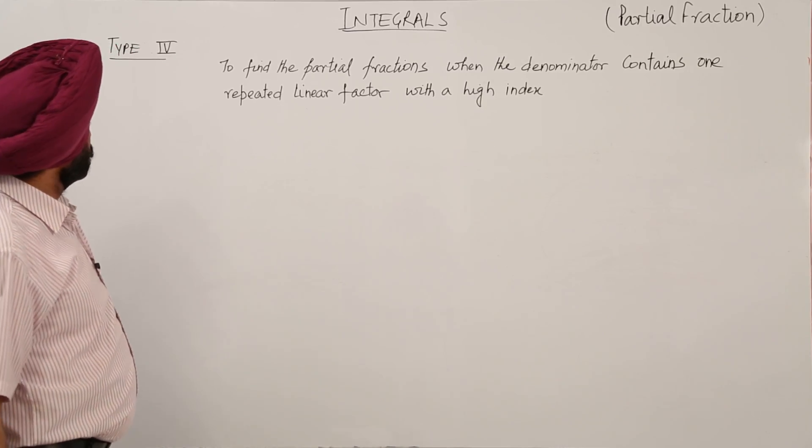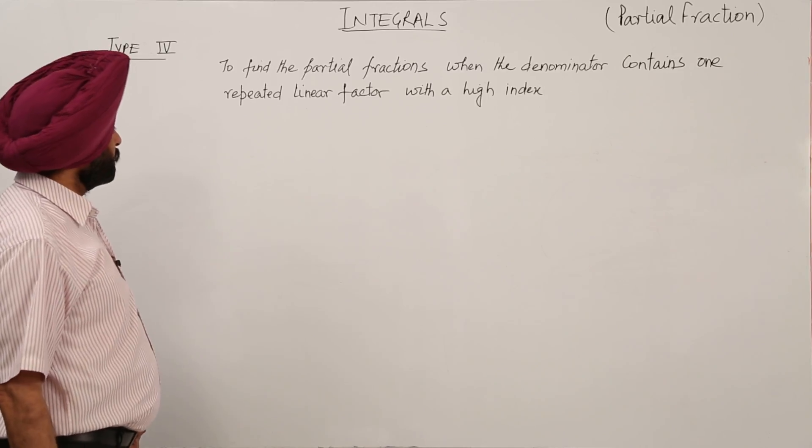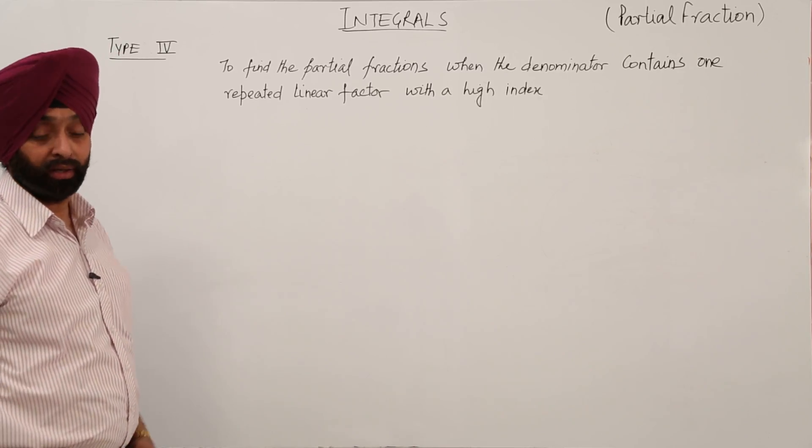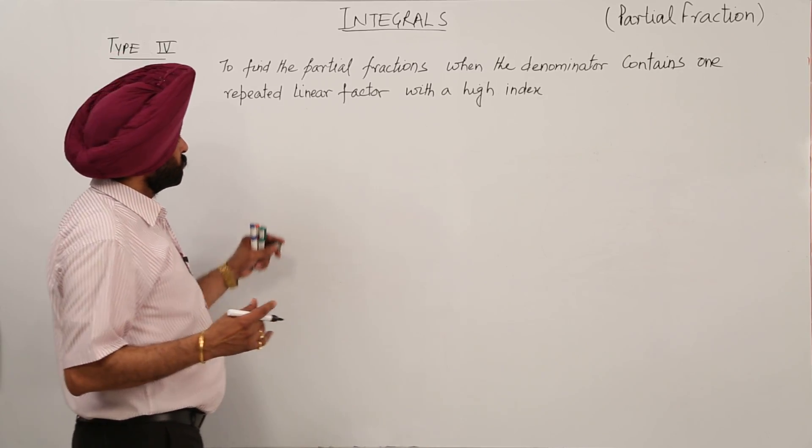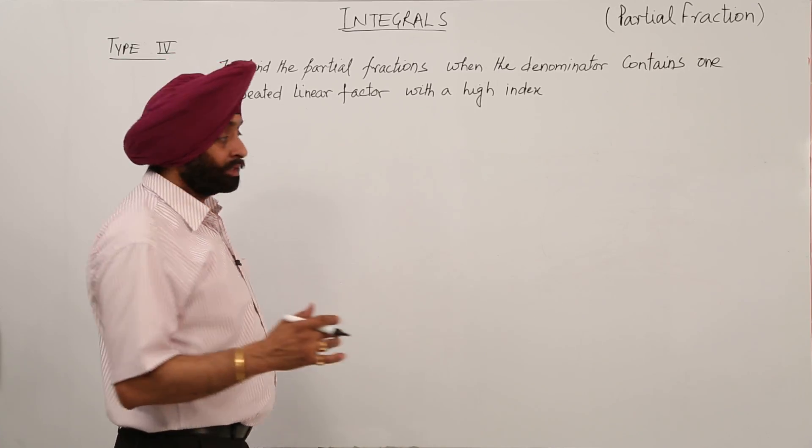Now type 4 is to find the partial fraction when the denominator contains one repeated linear factor with a high index. To explain this statement I will be going with an example.